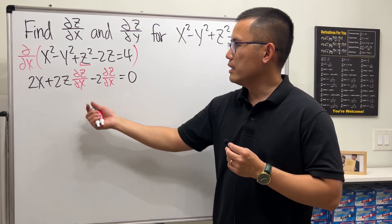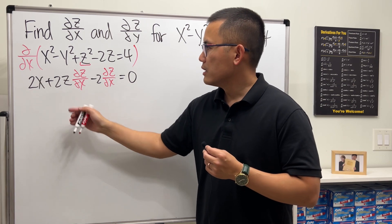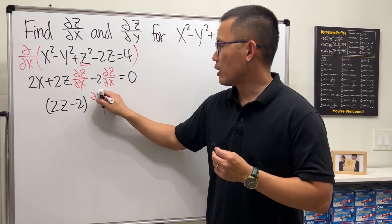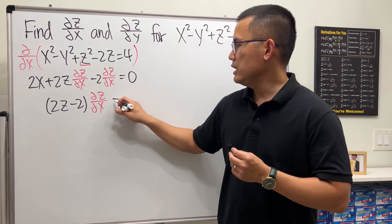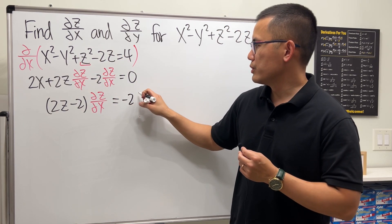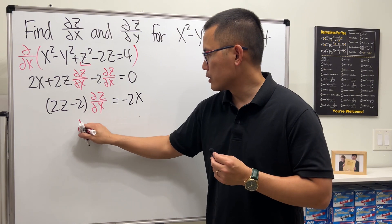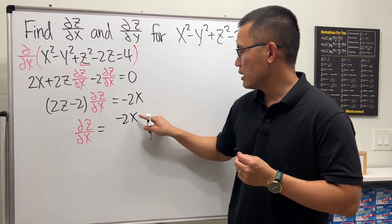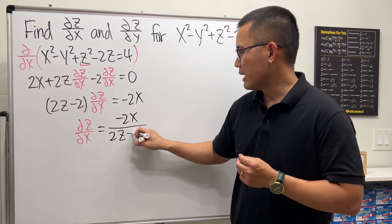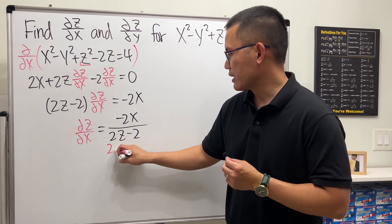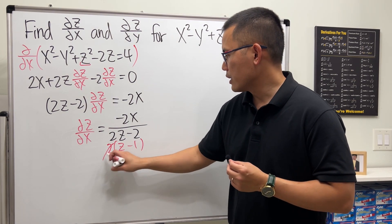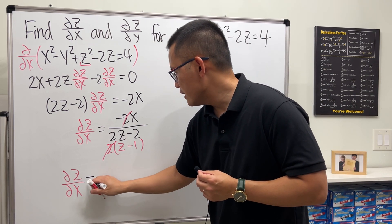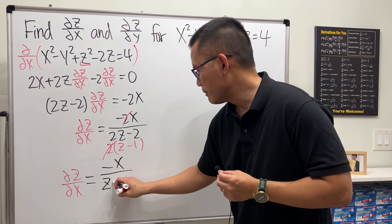I'm going to move this to the other side and also factor out the partial z with respect to x. So here we will have 2z minus 2 times partial z with respect to x, equal to negative 2x. Then divide to both sides: partial z over partial x equals negative 2x over 2z minus 2. We can factor out 2 to get z minus 1, and reduce this. So partial z with respect to x is negative x over z minus 1.